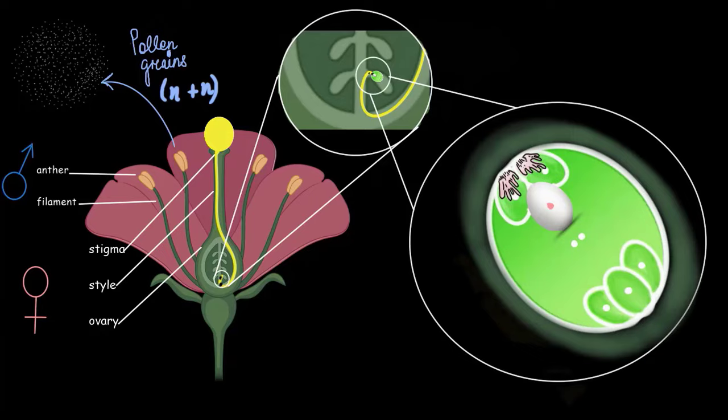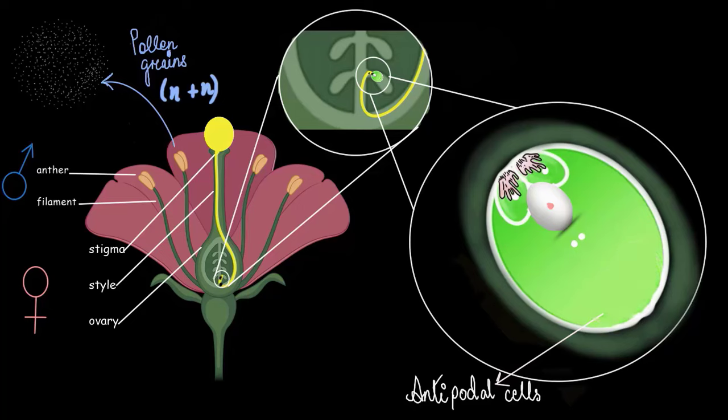Now, take a moment to look at the structure of this embryo sac. You will see that it has one large cell and few small cells. So, let's begin with these three cells here. These three cells here are called antipodal cells. Now, the role of these antipodal cells in fertilization is not known. Some research shows that this persists all throughout fertilization. And some also believe that it disintegrates. So, like in most common textbooks, let's consider that it disintegrates.